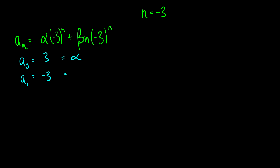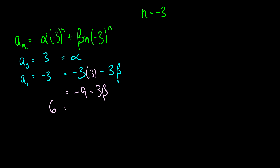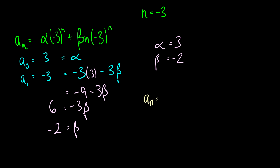Plugging in a_1 = −3: −3 = −3·alpha − 3·beta. Since alpha = 3, we get −3 = −9 − 3·beta, so 6 = −3·beta, giving beta = −2. So alpha = 3 and beta = −2. Plugging into our formula: a_n = 3·(−3)^n + (−2)·n·(−3)^n.